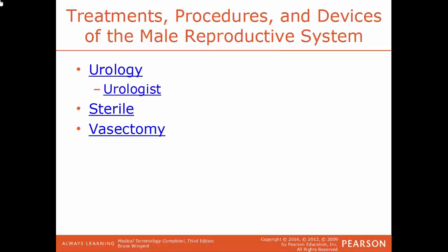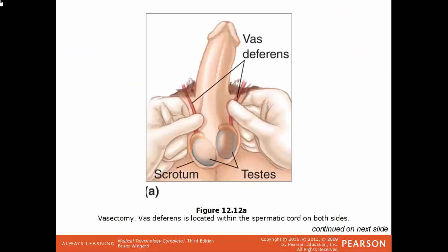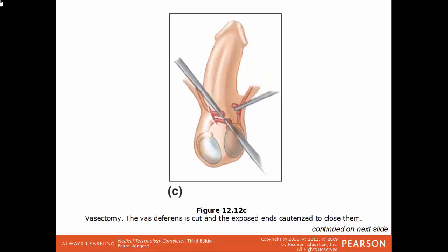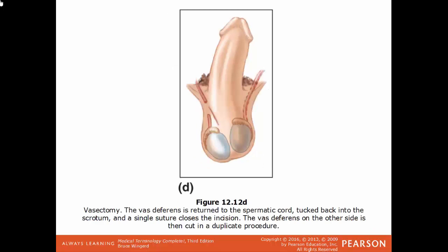Urology is the field of medicine dealing with the study of the urinary tract — a specialist is a urologist. Sterility is the inability to produce offspring or being incapable of reproduction. Vasectomy is a medical procedure where a part of the vas deferens is removed — a form of birth control for a male. An incision is made to cut the vas deferens, and the two ends are either cauterized or tied off so they cannot rejoin. The vas deferens is then placed back into the scrotum.